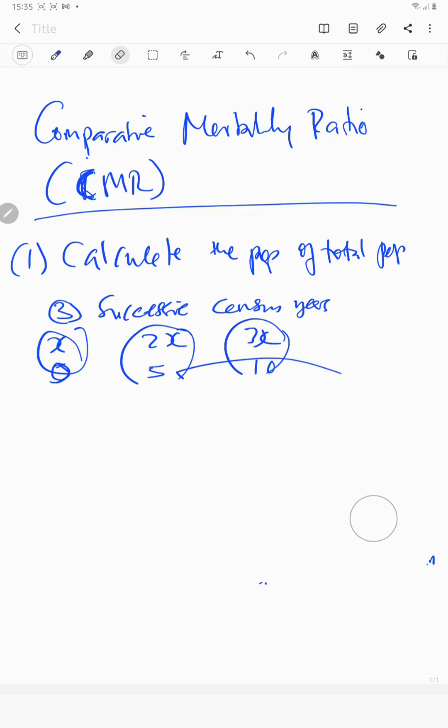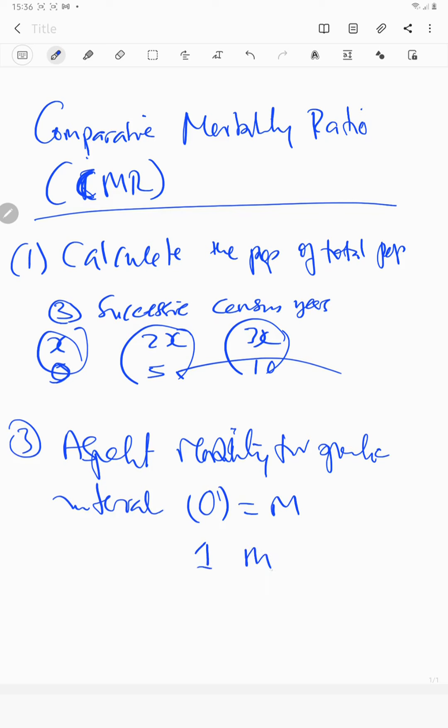Having done that, number three is you must be able to calculate the age-specific death rate for the successive intervals. You can calculate age-specific death mortality for year zero, given by big M, and for interval number one, given by ma1, and for interval number two, given by ma2, respectively.